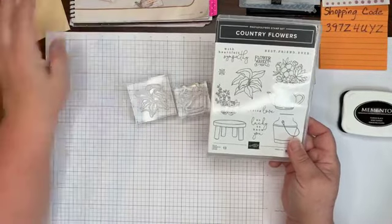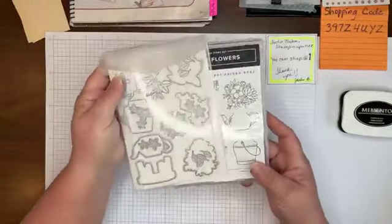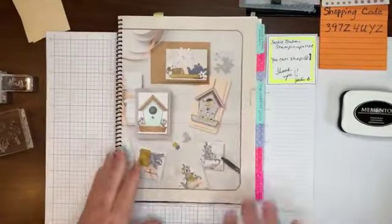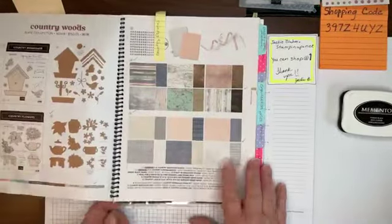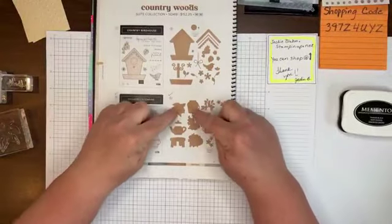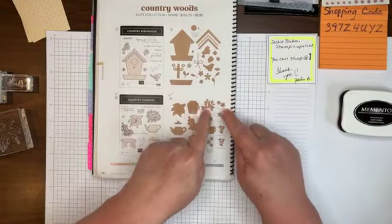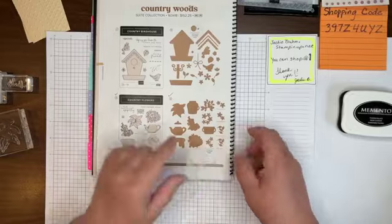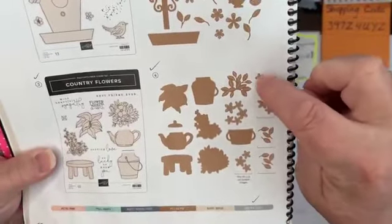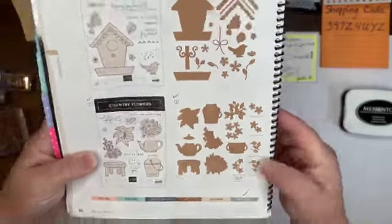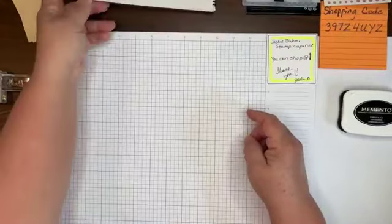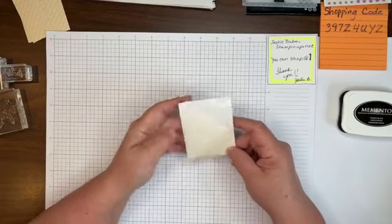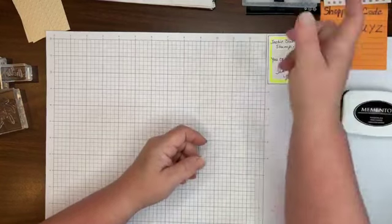And my stamps that I used today are from the one that goes with this one, which is the Country Flowers. And the dies, which I don't know about you, but I love the dies. Here, let me show you. The dies are really cool, because they give you the ones that match, and then they give you these additional ones you can play with. Look at all these flowers and stuff. And whenever you see this little line under here, that means that these two are together. So, you can do them together. Okay? So, that's really kind of cool. And I did have some dimensionals, a little bit of them from my Paper Pumpkin kit. So, I also used those.